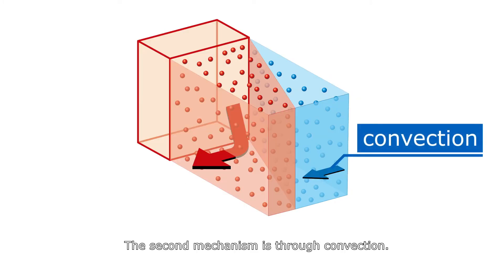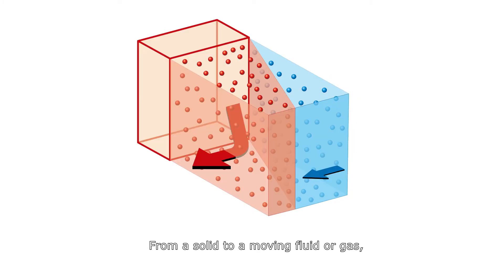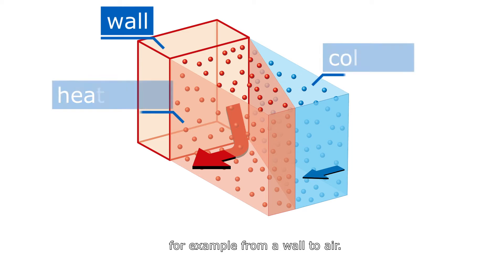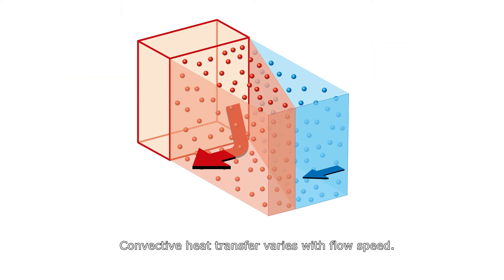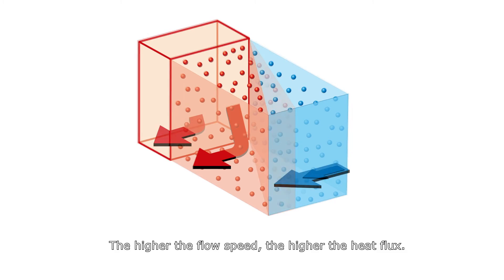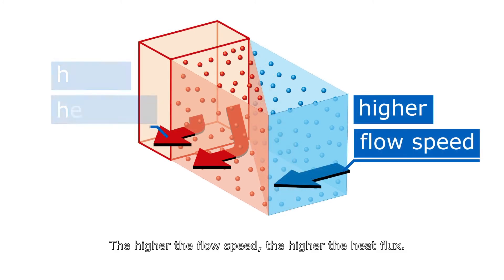The second mechanism is through convection. From a solid to a moving fluid or gas, for example, from a wall to air. Convective heat transfer varies with flow speed. The higher the flow speed, the higher the heat flux.